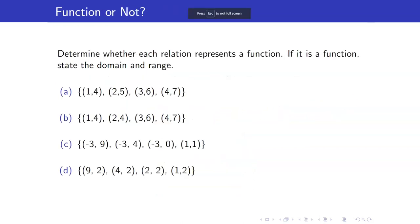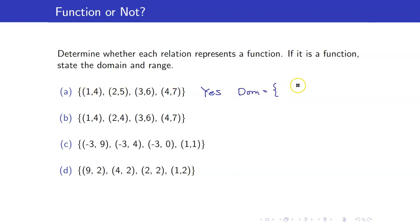Let us determine whether each relation represents a function and, if it is, find its domain and range. For the first set of ordered pairs, the first coordinates are not repeated, so yes, this is a function. Its domain is the set of all first coordinates: {1, 2, 3, 4}, and its range is {4, 5, 6, 7}.